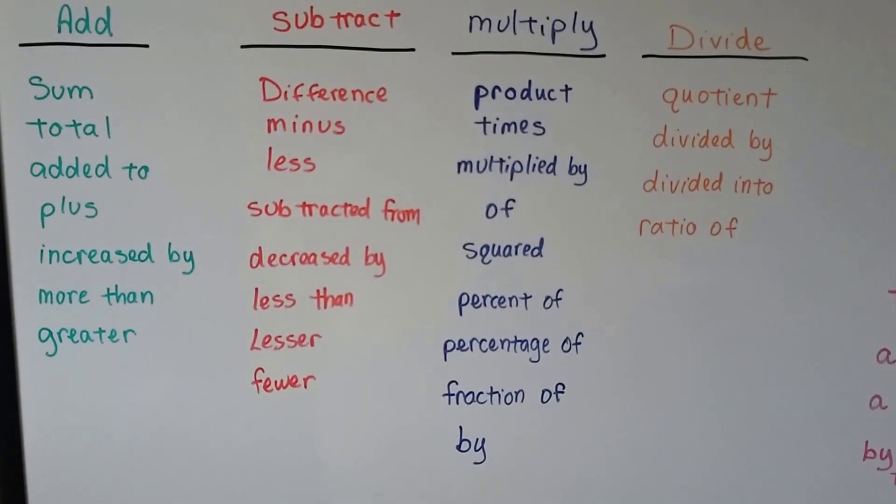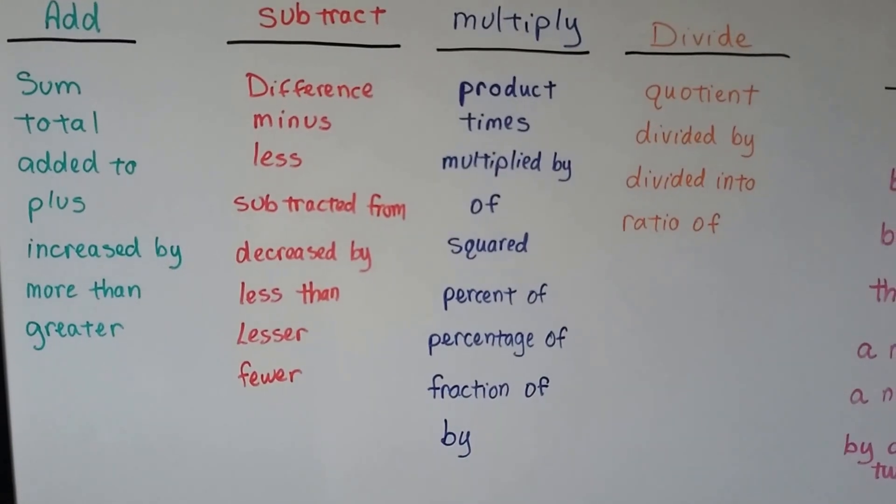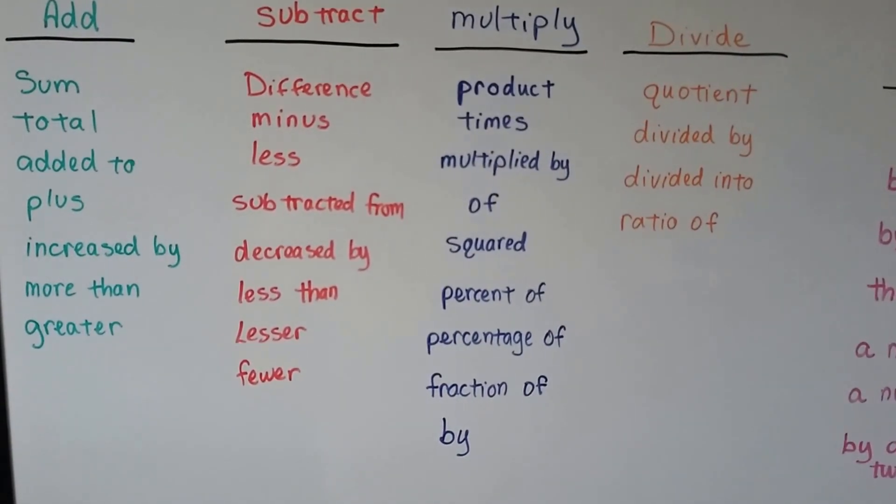If it wants multiplication, we're going to see words like product, times, multiplied by, of, squared, percent of, percentage of, fraction of, or by.